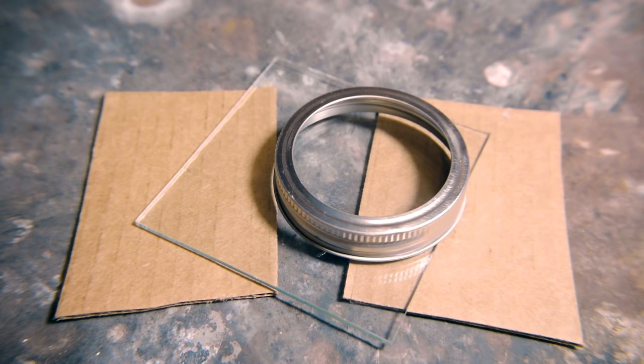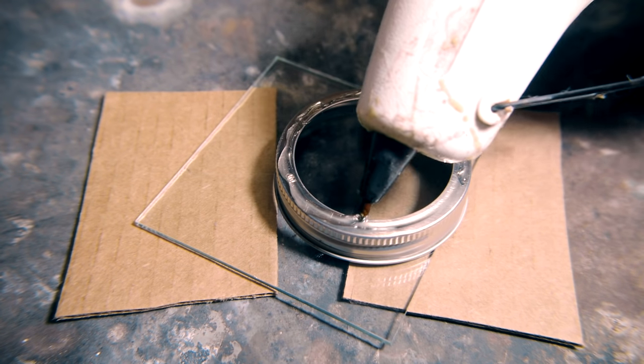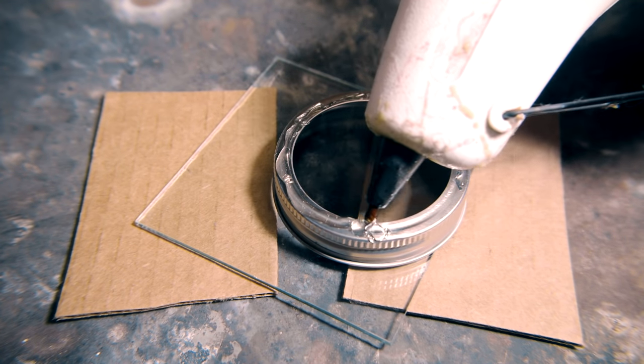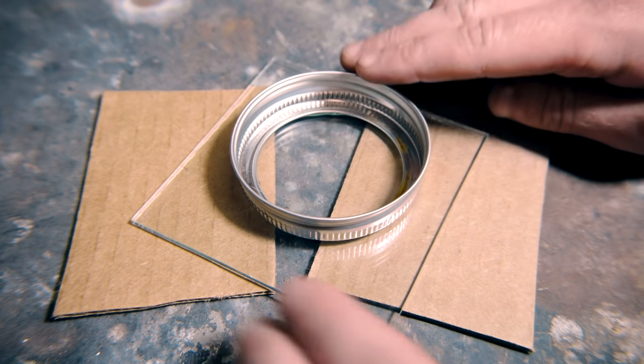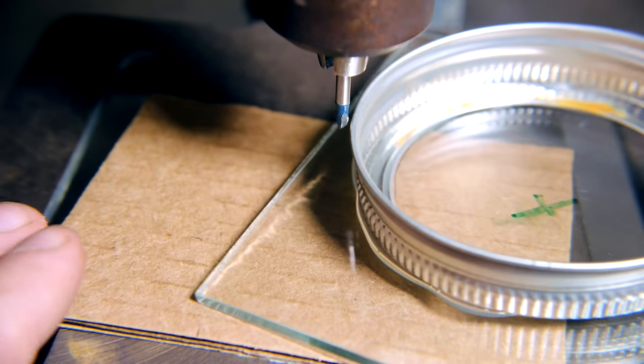Now I need to drill a hole through the center of this glass, which is a task that requires the drill bit to be submerged in water. A trick for this is to glue a ring onto the glass itself, which can then be filled with water before drilling.